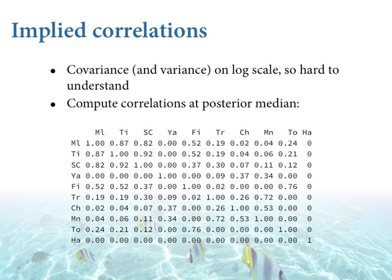Next step in crawling forward to understand this model: let's take the posterior median covariance function and see what correlations it says exist between islands. Let's look at correlations because then this is scale-free — however much variation there is in tool complexity in the data set, let's get rid of that part and just think about, in a scale-free sense, how correlated the different islands are with one another as a function of their distance.